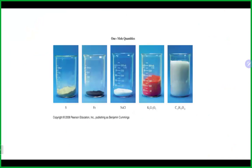These are all one-mole samples of sulfur, iron, and sodium chloride. Why do they all look like different amounts if they're technically the same amount? Because one mole of sulfur is 32.07 grams, one mole of iron is 55.85 grams, and one mole of sodium chloride is about 58.44 grams — different numbers of grams for each substance, even though they all represent one mole.